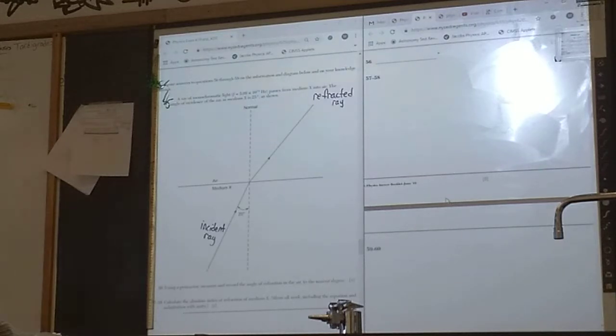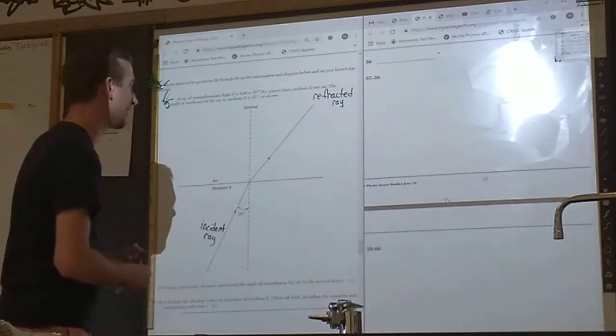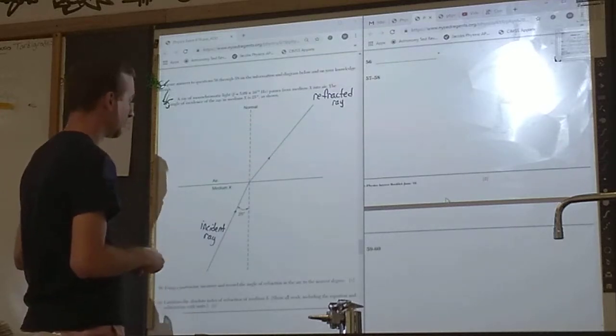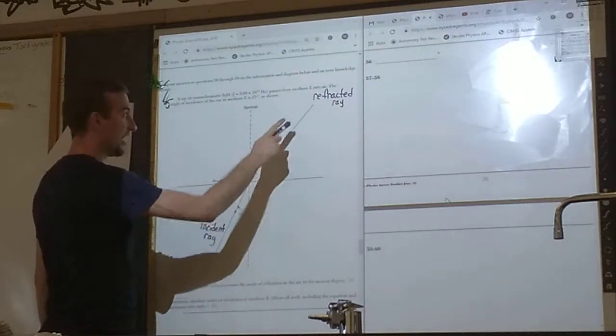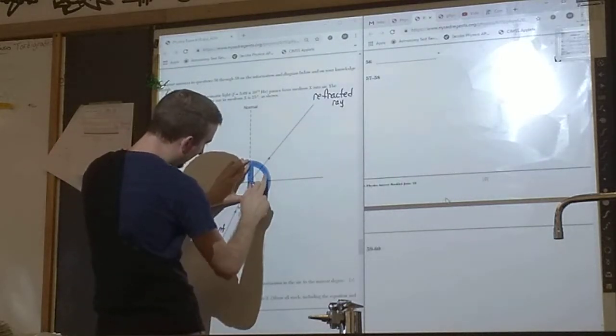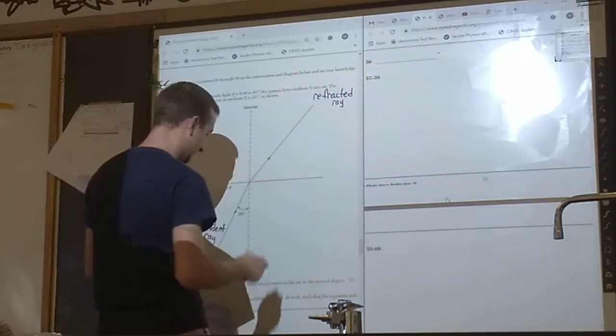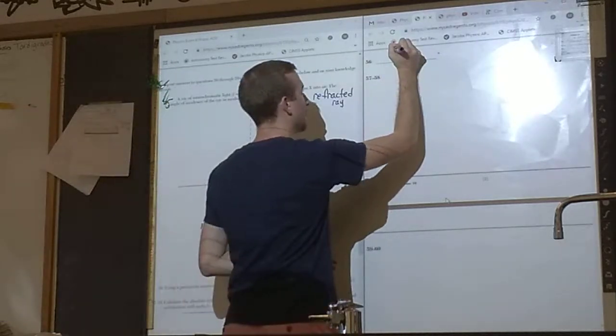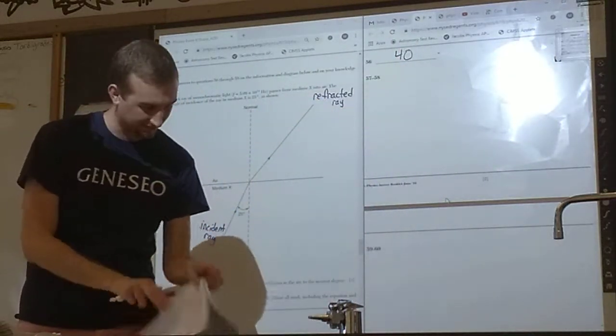Record the angle of refraction to the nearest degree. You get some leeway with this. You need to be within two degrees of what the answer key says. I need to measure - notice that the incident ray is measured between the ray and the normal line. I need to measure between the normal line and the refracted ray to get this angle. I'm getting that it is about 40 degrees. Make sure your protractor is lined up correctly. You can verify the same thing on your packet. Make sure that you are measuring the correct thing.